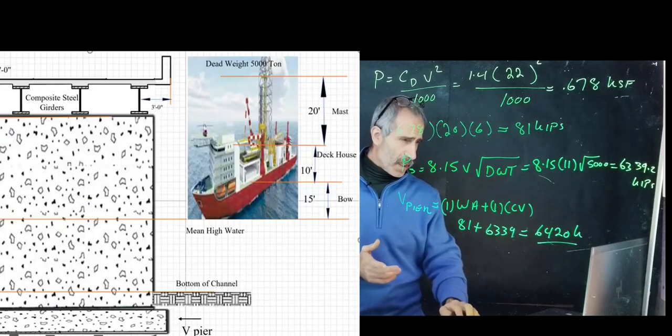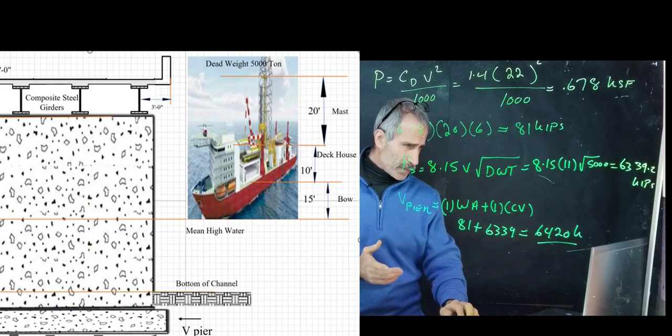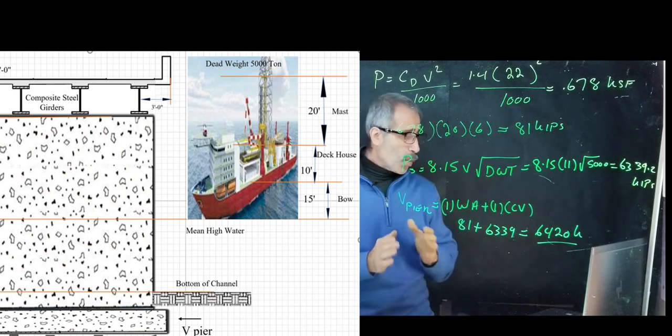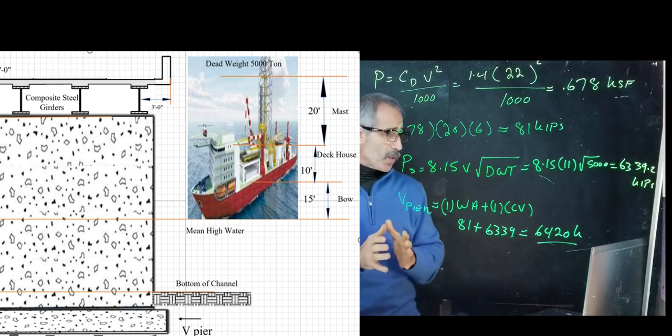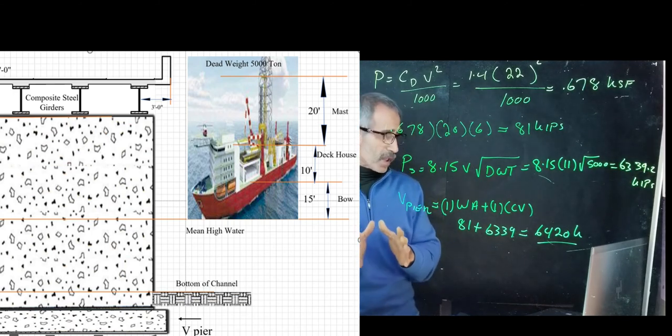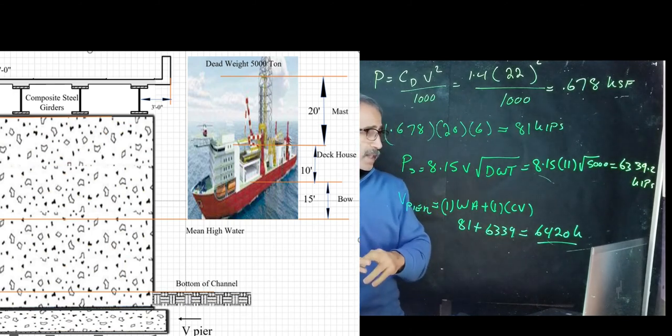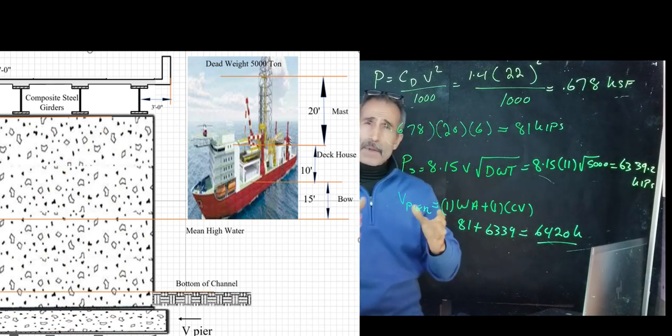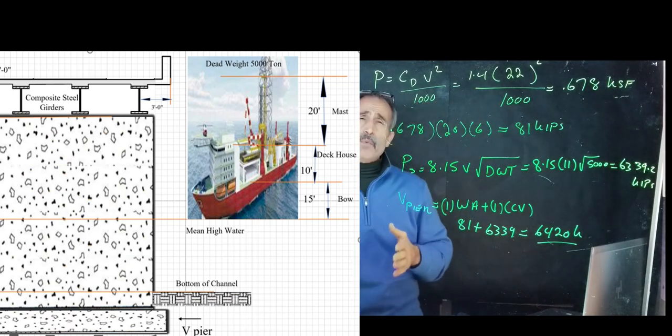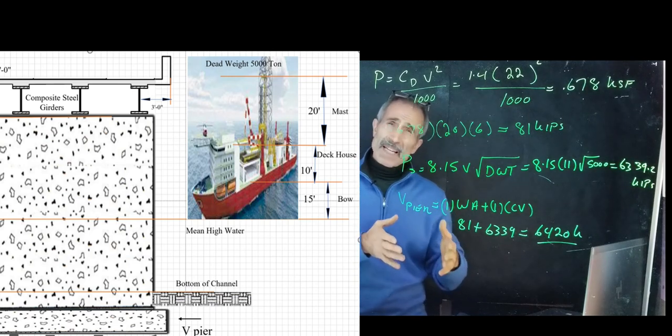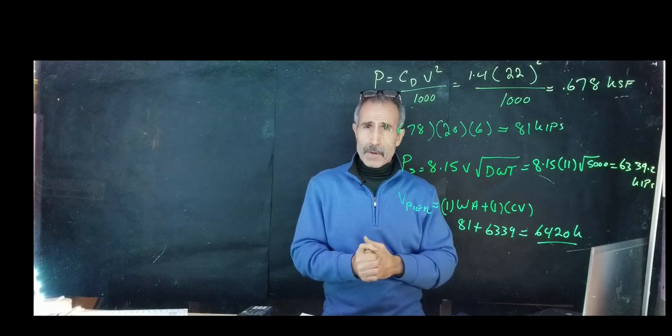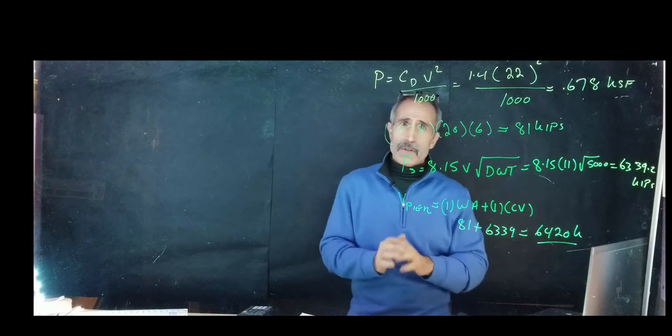When you look at the picture, you need to find out which part of the ship is going to collide with the superstructure. Is it the bow, the deck house, or the mast? Based on that, you go to AASHTO section 3.14.8 to 3.14.10 and find out which one applies to your problem. Good luck, see you next time in class.